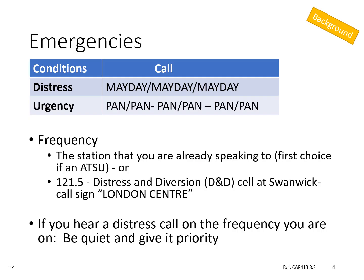There are two types of emergency call. A distress call requires immediate assistance, typically because there's danger to life. This is a Mayday call, and that comes from the French for 'help me' rather than the festival in May. An urgency call is one where immediate assistance is not required, but it does concern safety. That's a Pan Pan call. If you have to make such a call, you can either make it on the frequency that you're on, or you can call London Centre on the emergency frequency of 121.5.